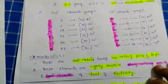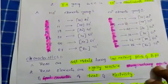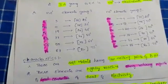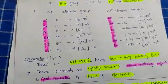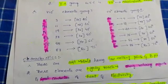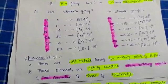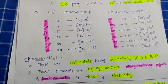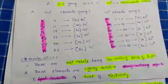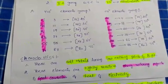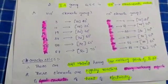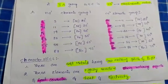Characteristics of S-block elements: these are soft metals having low melting points and boiling points. These elements are highly reactive, strong reducing agents, and good conductors of heat and electricity.